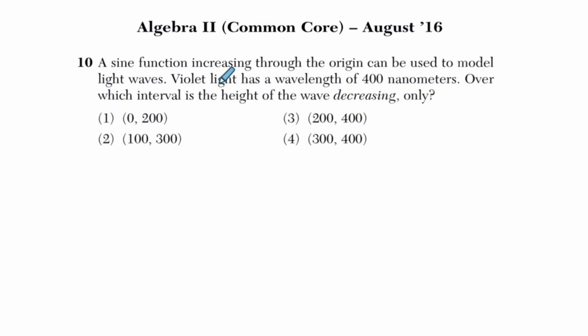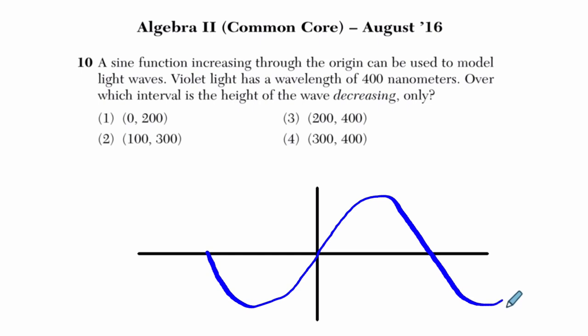So it says a sine function increasing through the origin can be used to model light waves. All right, so they're not giving us many specifics here, so the first thing I'm going to do is just sketch an x-axis and a y-axis, and then I'm going to do my best to sketch what I just heard. I heard them say there's a sine wave that's increasing through the origin, so like this. I'm just going to keep drawing it. It's going to be cyclic. It's going to keep going forever.